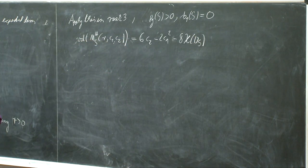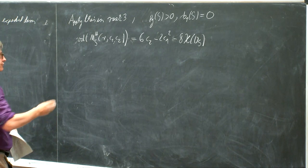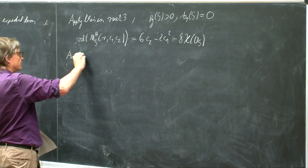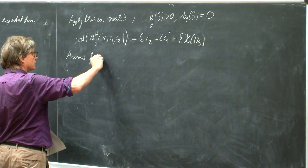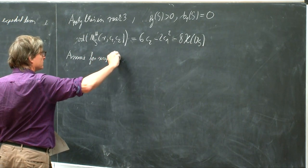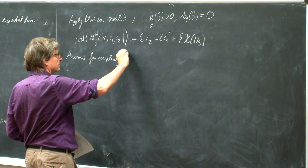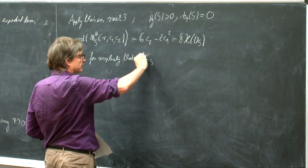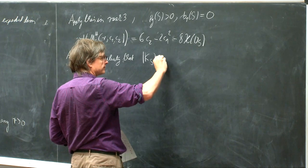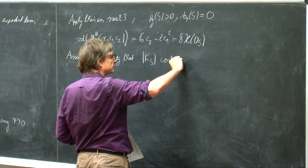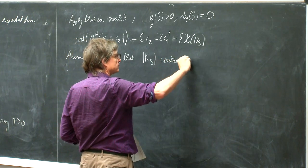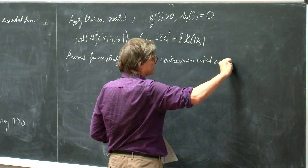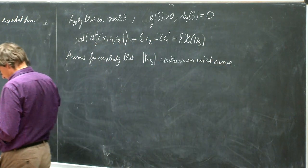So we find that the virtual dimension of the moduli space will be in this case 6C2 minus 2C1 squared minus 8 times the holomorphic Euler characteristic. And let's again assume for simplicity that there is an irreducible canonical curve. Otherwise the result will be in terms of Seiberg-Witten invariants.